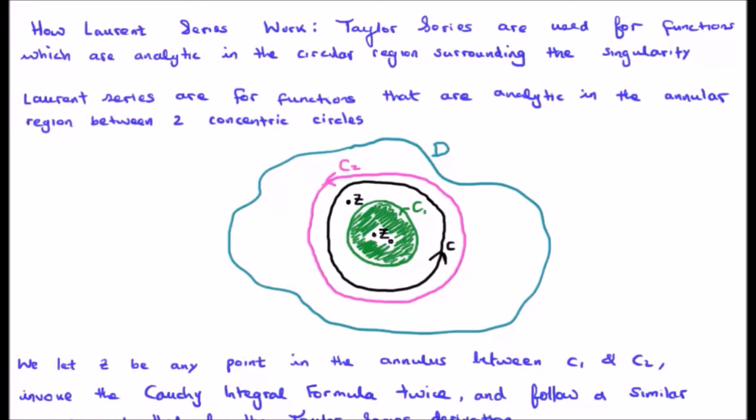How do Laurent series work? Well, Taylor series is used for functions which are analytic in a circular region surrounding the singularity. Laurent series are for functions that are analytic in an annular region between two concentric circles. Look at our domain D in blue. We have our pole z zero. We also have two paths C2 in pink and C1 in green. That makes an annular region. The annular region is here, kind of like a donut.